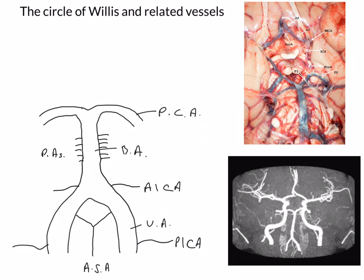The pontine arteries are very important because they supply a lot of the corticospinal fibres running down through the pons itself. Looking superiorly, we have the superior cerebellar arteries, and then the posterior cerebral arteries. What we've drawn constitutes the posterior circulation, since it derives primarily from the vertebral arteries.